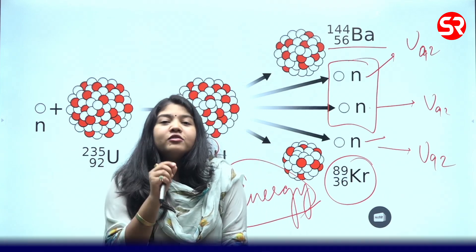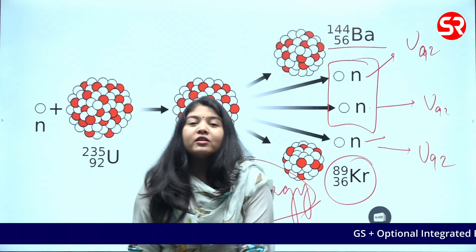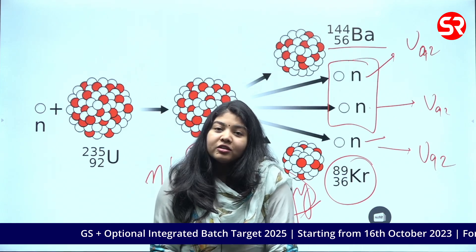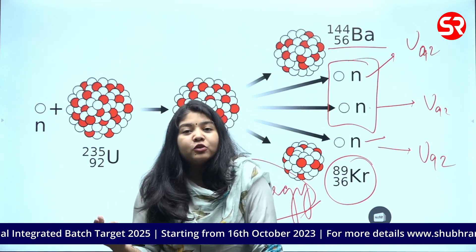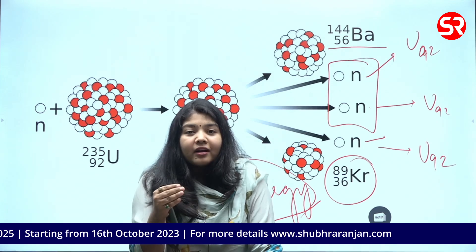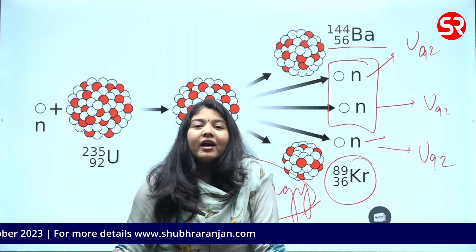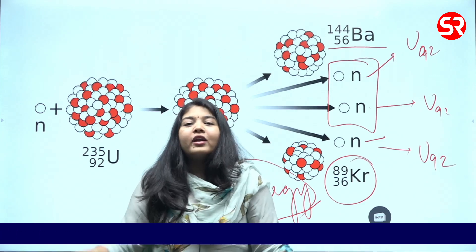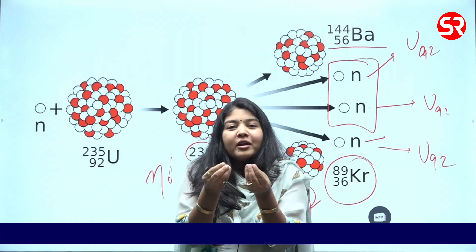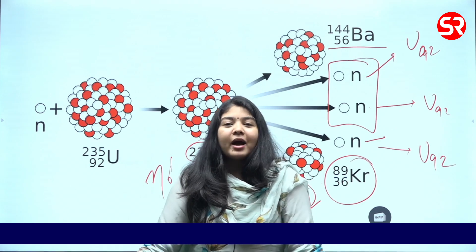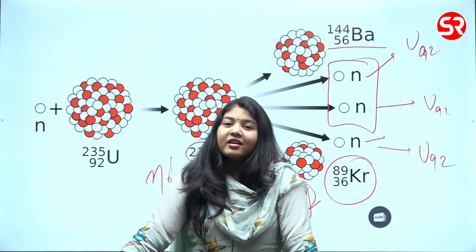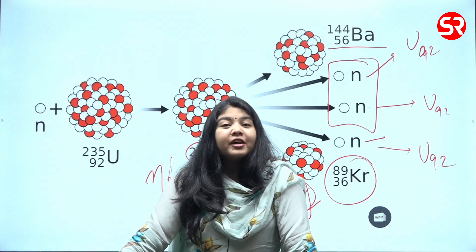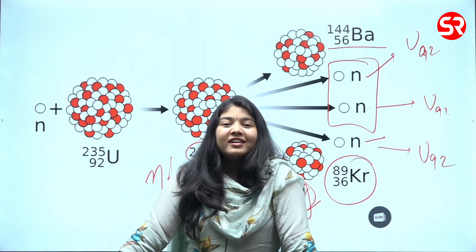Today we understood what nuclear energy is and how it is produced. One way is by breaking a bigger element into smaller ones. The larger source of energy is when two small elements are united to make a bigger element — which happens in stars and in the sun. We will continue and understand nuclear fusion in the next episode.